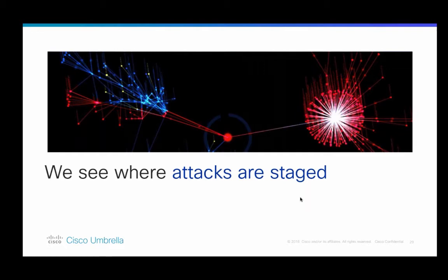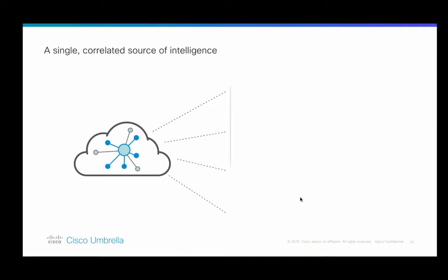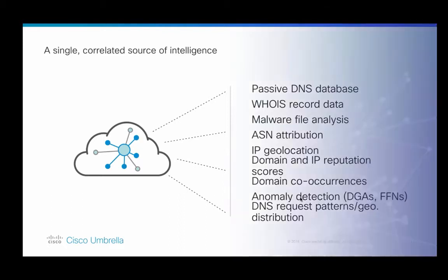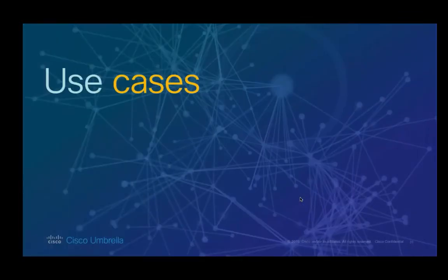Using this association data along with reputation and scoring data, we're able to show where attacks were staged and discover attacker infrastructure before it's able to target your organization. Investigate combines many different threat intelligence and enrichment sets such as passive DNS, WHOIS information, malware file analysis, and anomaly detection. While it's possible to get all this information in open source solutions or piecemeal through different products, the real power of Investigate is that this information is all correlated together and provided in a single correlated source.